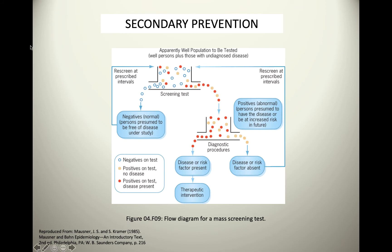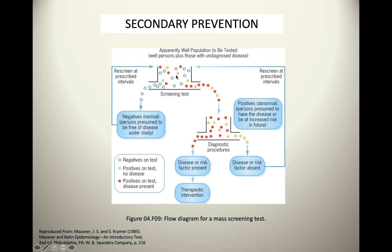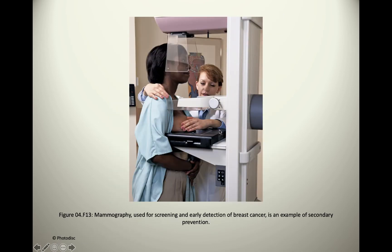Secondary prevention looks at screening — you get tests to screen. For example, tuberculosis screening: if you test negative, great, you don't have TB. But if you test positive, they will take steps to prevent the disease from spreading or to control it. Mammograms are another example — if someone tests negative, they come back in six months to continue screening. The goal is to catch the disease preclinically, before it spreads.